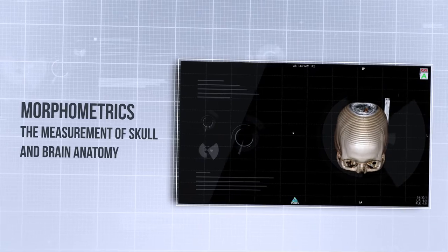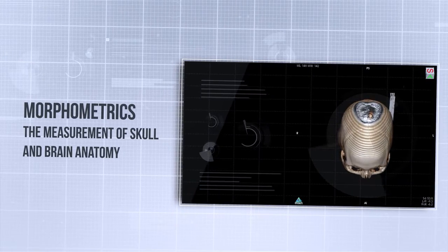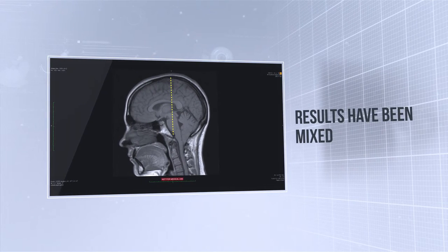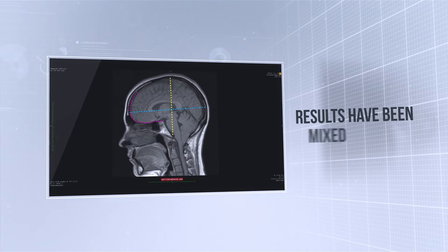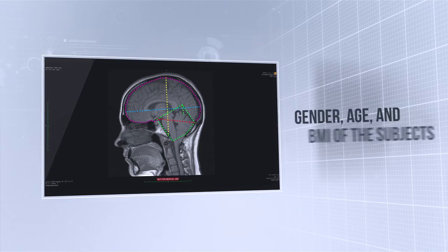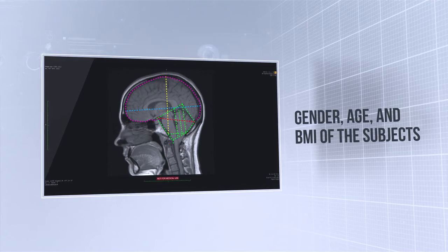Morphometrics, the measurement of skull and brain anatomy, has been a focus of Chiari research for years. However, results have been mixed and significantly limited by the inclusion of small numbers of patients, inconsistent measuring techniques, and not accounting for the gender, age, and BMI of the subjects.